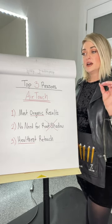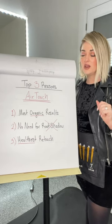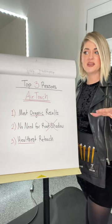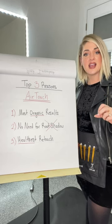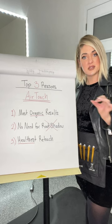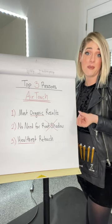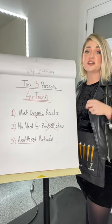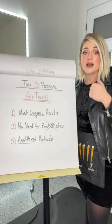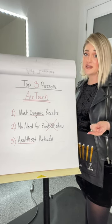Number two: there is no need for a root shadow. There's a saying — touch it once — meaning get it right the first time. With air touch your work is so flawless to the scalp and root that you don't need to go in and use a darker formula during your glossing to cover up mistakes or create gradients. This saves you time, saves product, and cuts the costs of doing business — which you can pass on to the customer and/or put in your pocket.